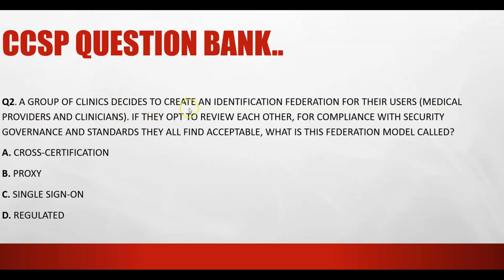The second question: a group of clinics decided to create an identity federation. They opted to review each other's compliance with security governance standards they all find acceptable. What is this federation model called? The two federation models are cross-certification (web of trust) and proxy. Since there is no single third-party identity provider involved, and each party is reviewing the others, this is a cross-certification example.